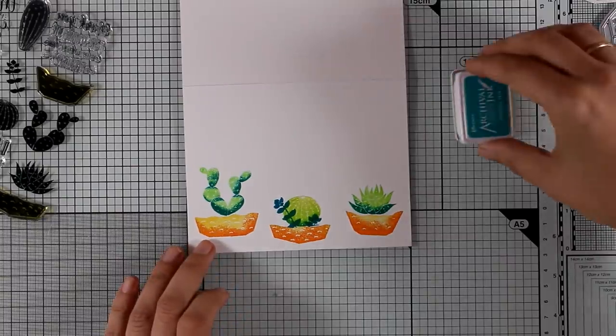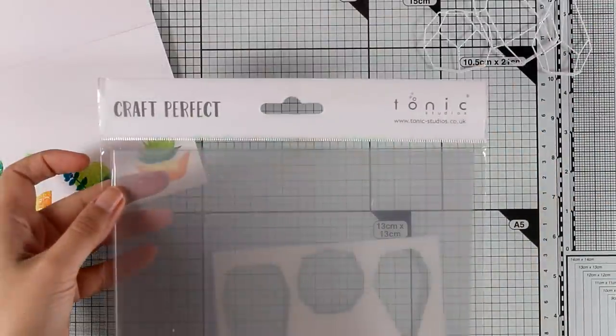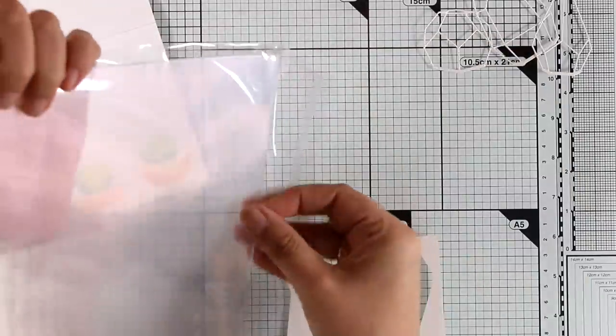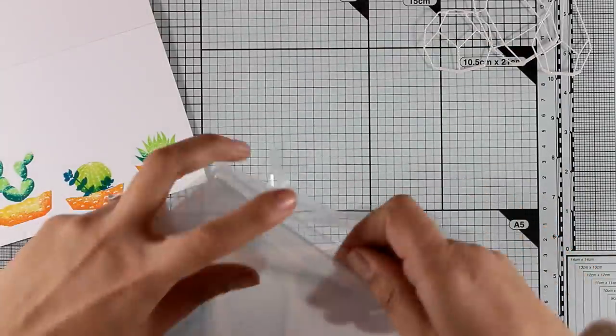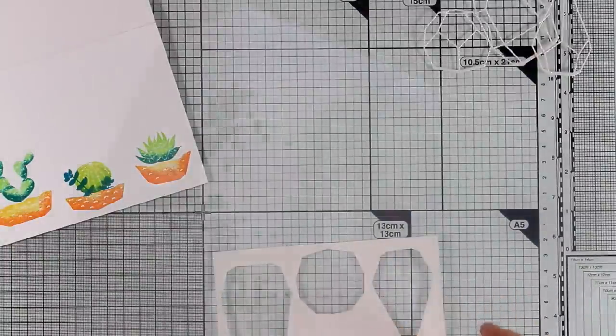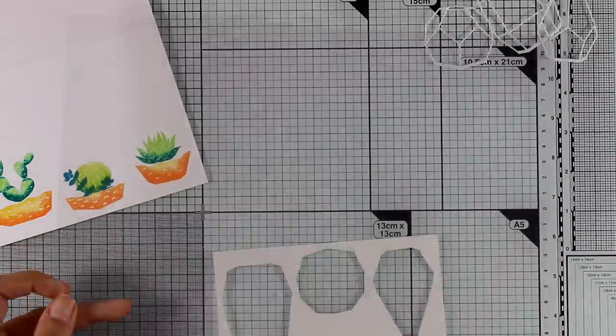Now the stamping on my card base is done, so let's work on the window. For my windows I usually work with leftover acetate that I have from packages, but I wanted to show you this product that I absolutely love. This is very heavy acetate, it's perfect for construction, and I know that it would make a great box as well if you have those dies to create little boxes.